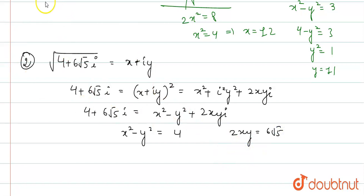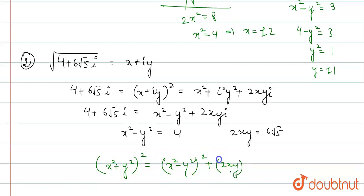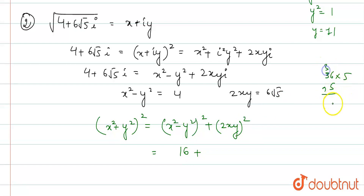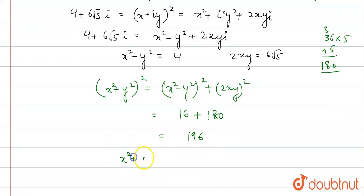Now (x squared plus y squared) squared equals (x squared minus y squared) squared plus (2xy) squared, which is 4 squared plus (6√5) squared equals 16 plus 36 times 5 equals 16 plus 180 equals 196. So x squared plus y squared equals plus or minus 14, and since it can't be negative, x squared plus y squared equals 14.